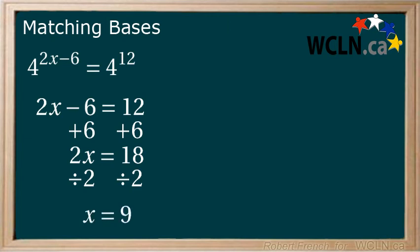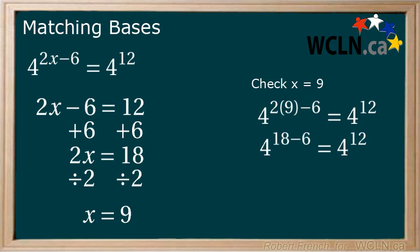Now let's replace x into our original equation to see if this works. We now have 4 to the power of 2 times 9 minus 6 equals 4 to the power of 12. 2 times 9 minus 6 equals 18 minus 6 which equals 12. So we have 4 to the power of 12 equals 4 to the power of 12.